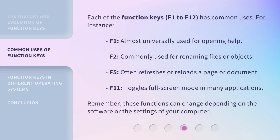Each of the function keys, F1 to F12, has common uses. For instance, F1 is almost universally used for opening help. F2 is commonly used for renaming files or objects. F5 often refreshes or reloads a page or document. F11 toggles full-screen mode in many applications. Remember, these functions can change depending on the software or the settings of your computer.